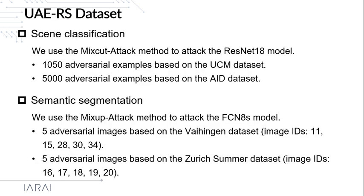We further collect the generated universal adversarial examples in a dataset named UAERS. For scene classification, we use the MixCut attack method to attack the ResNet-18 model, obtaining 1050 adversarial examples based on the UCM dataset and 5000 adversarial examples based on the AID dataset. For semantic segmentation, we use the MixUp attack method to attack the FCN-80S model, obtaining 5 adversarial images based on the Vaihingen dataset and 5 adversarial images based on the Zurich Summer dataset.